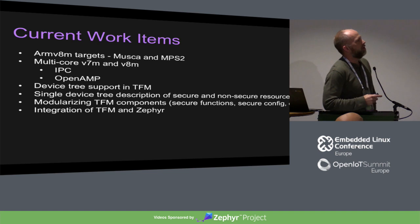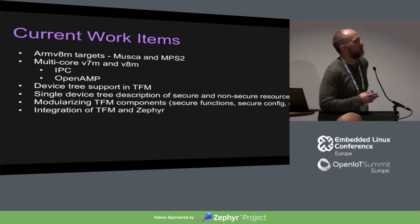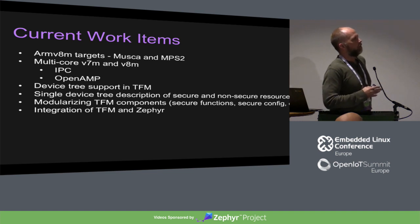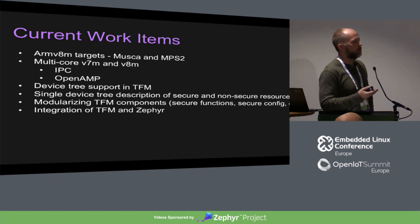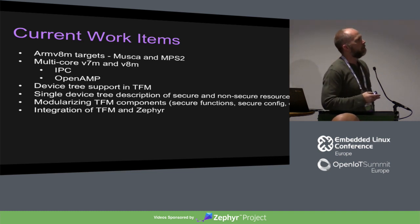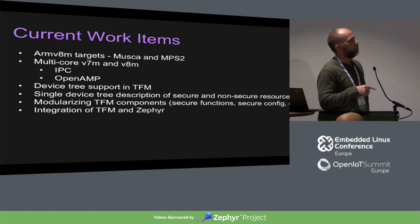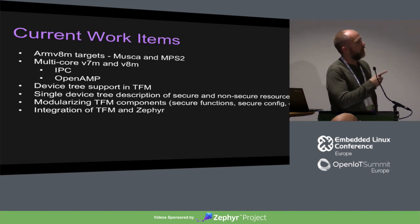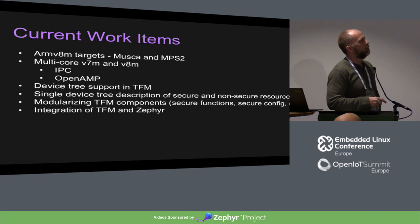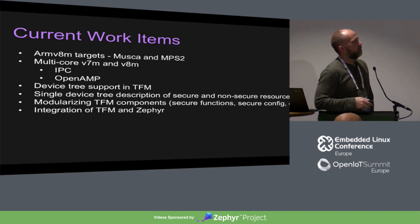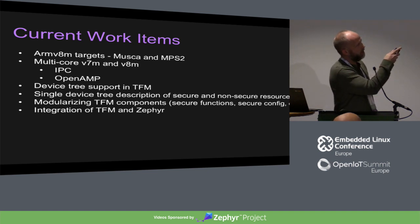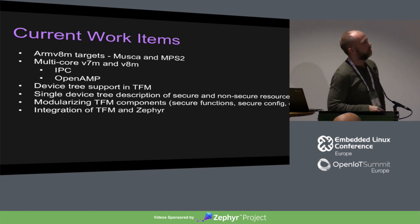For current work items: there are PRs out for MUSCA support, with a few outstanding comments. We're adding support for the MPS2, which is an ARM development board with an FPGA that lets you load different processor models — not just M33 or M23 but many others. We have multi-core work going in on both the V7M and V8M side. There are individuals in Lite working on OpenAmp, one person working on IPC for V7M, and we're spooling up V8M work on a board that has two M33s. There's also ongoing Device Tree work, which will land around the same time as MUSCA.